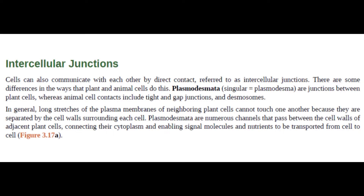Intercellular Junctions. Cells can also communicate with each other by direct contact, referred to as intercellular junctions. There are some differences in the ways that plants and animal cells do this.